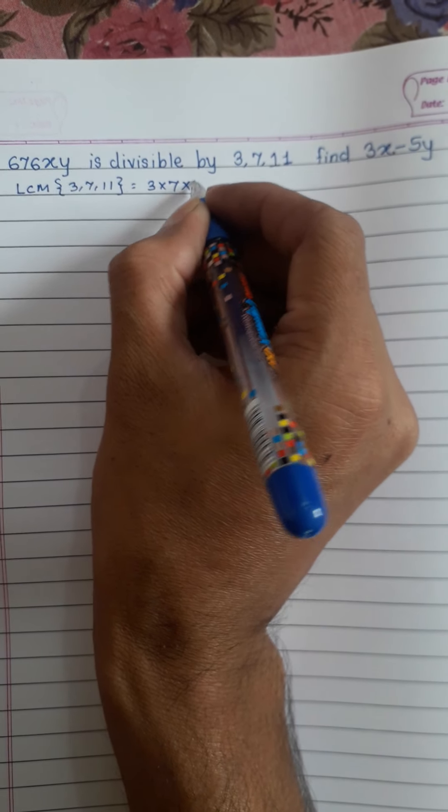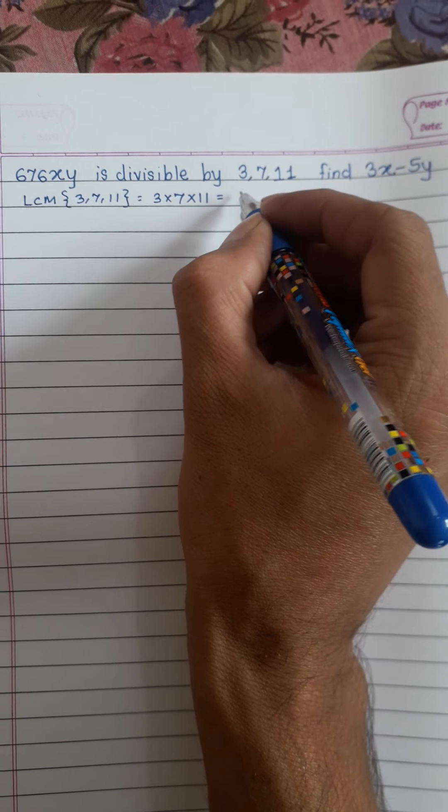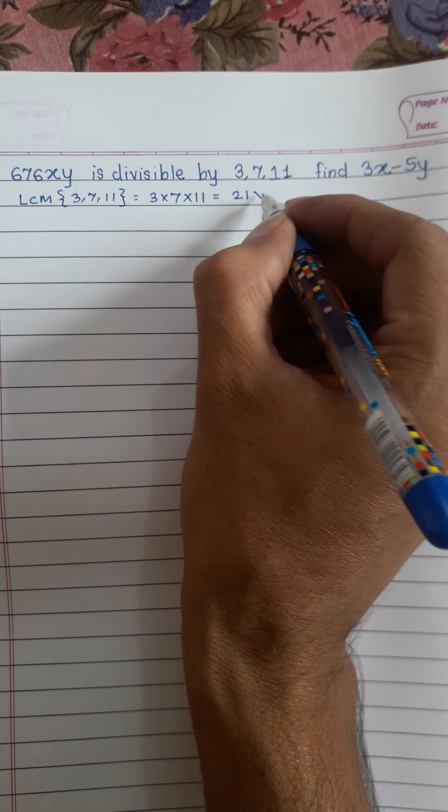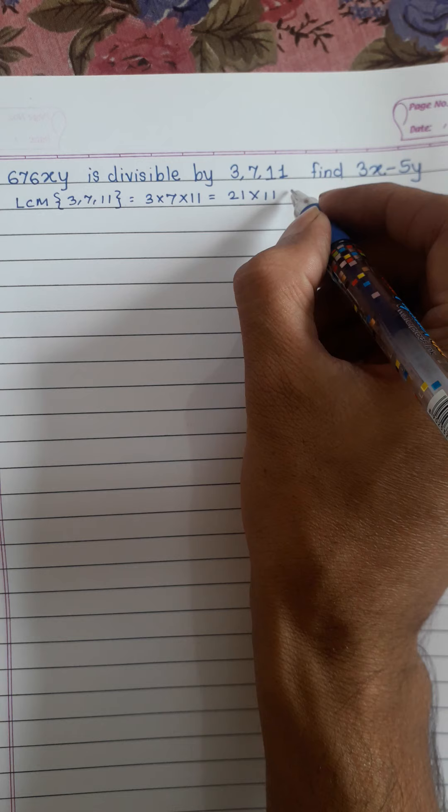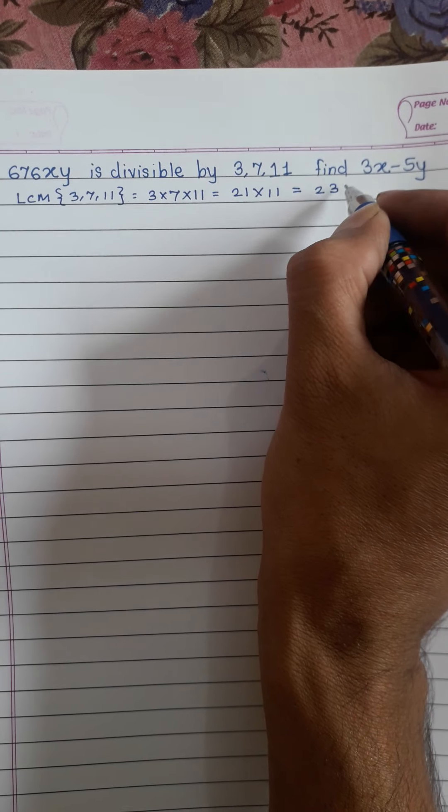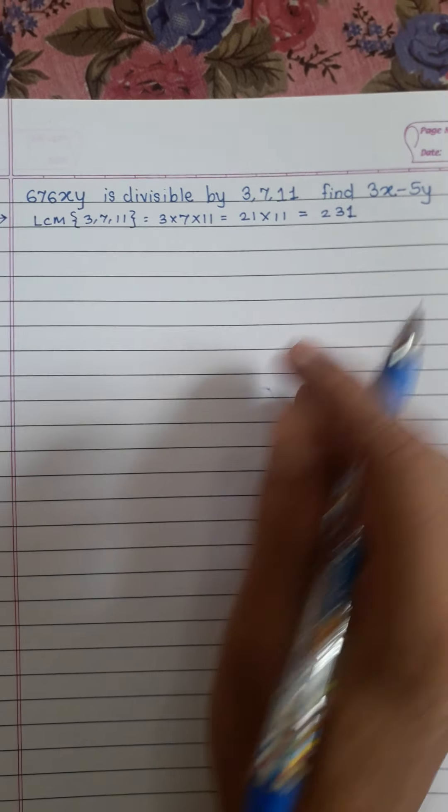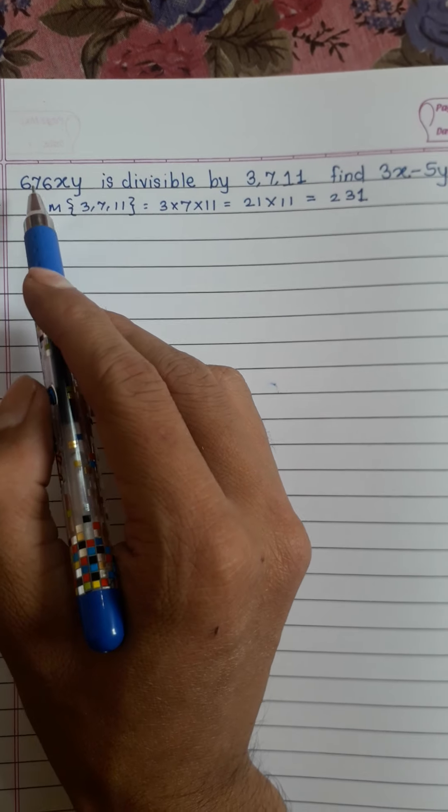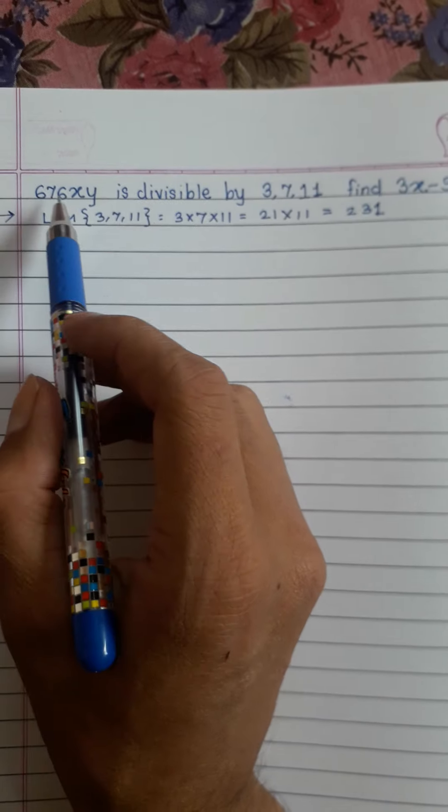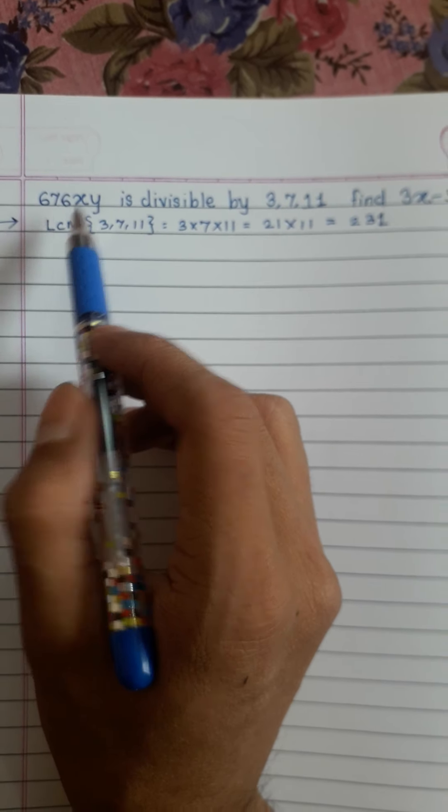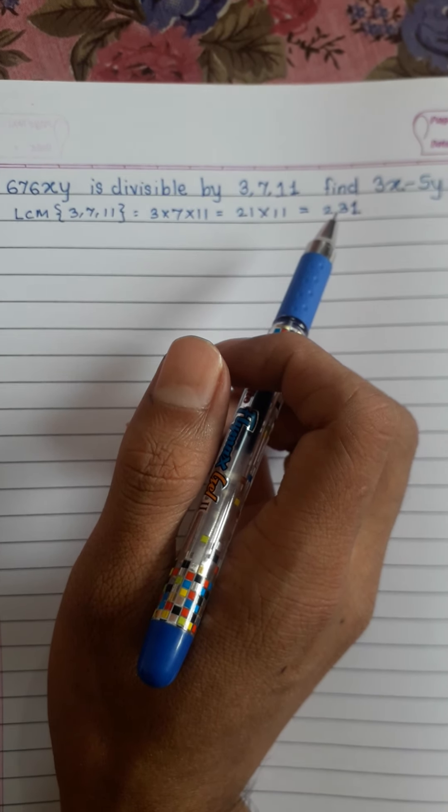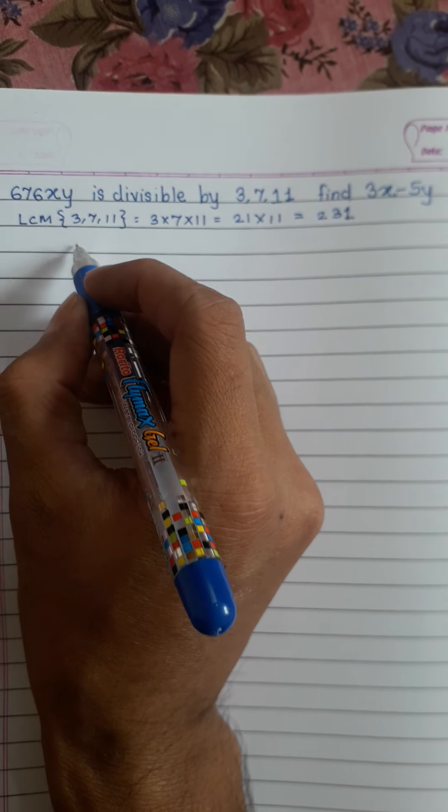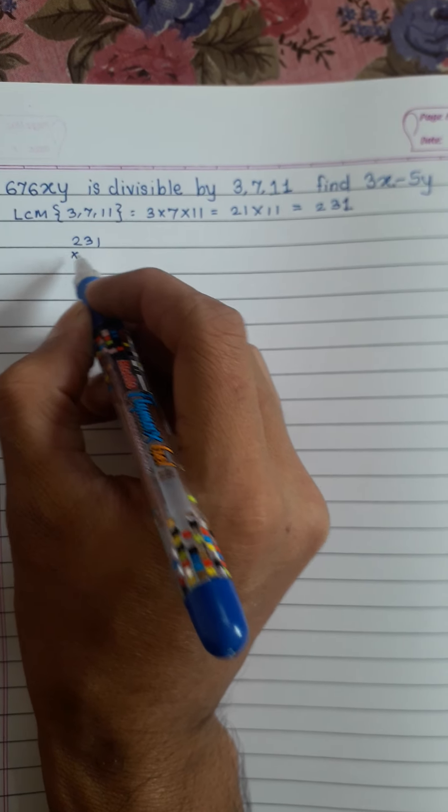into 7 into 11. This equals 21 multiply by 11, this is 231. Now we will find a number which is near to this number but which is completely divisible by 231. Suppose 231 times 3